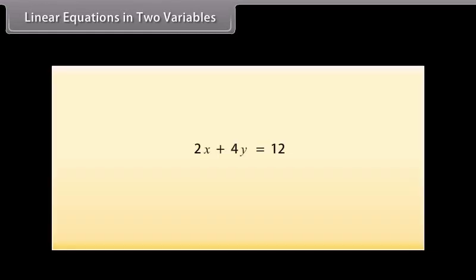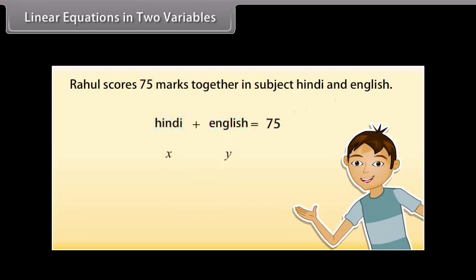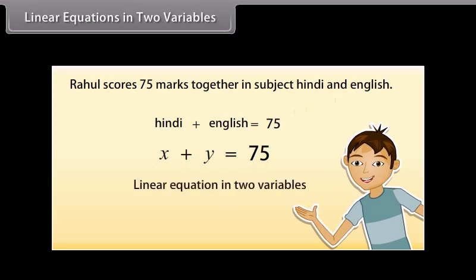A linear equation can have more than one variable. Here we will study linear equations in two variables. For example, Rahul scores 75 marks together in Hindi and English. Since the marks of neither subject are known, there are two unknown quantities. Let us use X and Y to denote them: marks in Hindi is X and marks in English is Y. So X plus Y equals 75 is the required equation — an example of a linear equation in two variables.